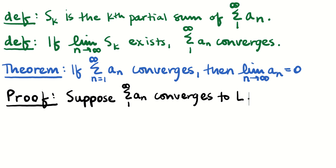I'll start by supposing that the series, the sum from 1 to infinity of a_n, converges to a value L. That means that the limit of the partial sums S_k of the sum from 1 to infinity of a_n has a limit, and that limit is L.